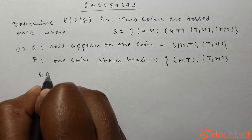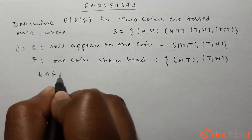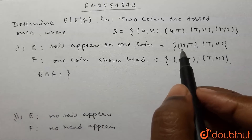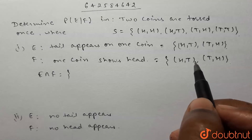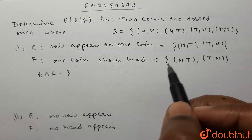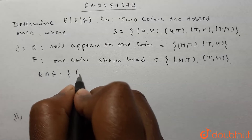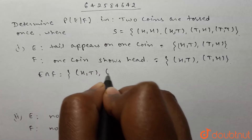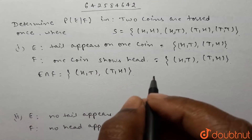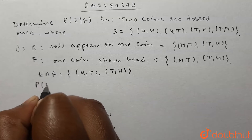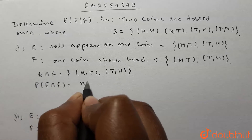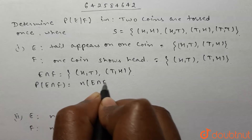Now, E intersection F: since {H,T} and {T,H} are common to both sets E and F, E intersection F will contain elements {H,T} and {T,H}.